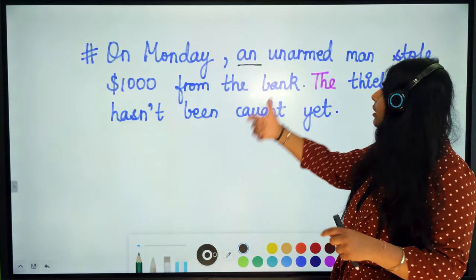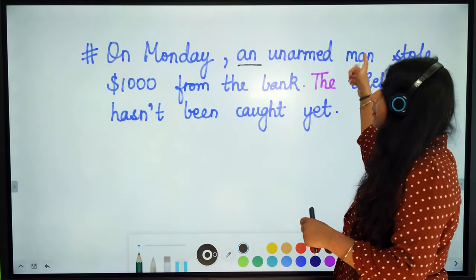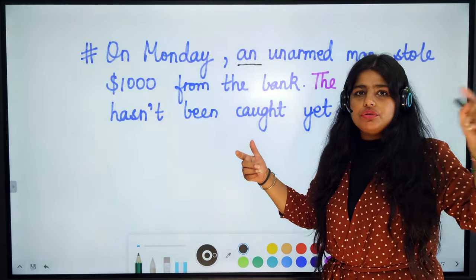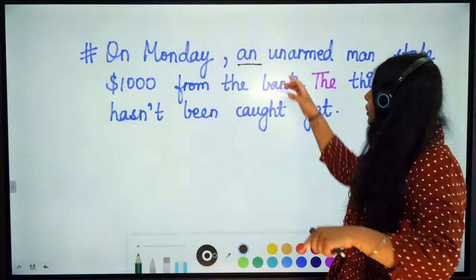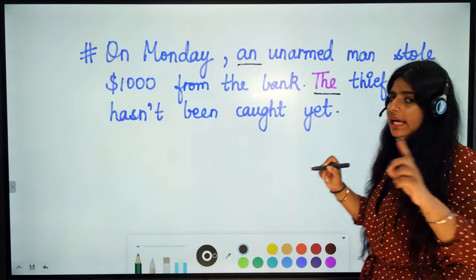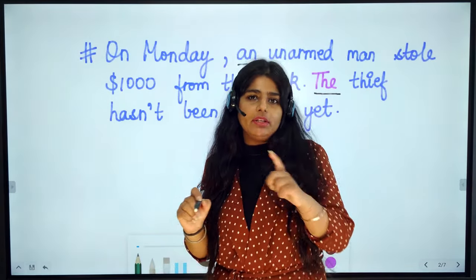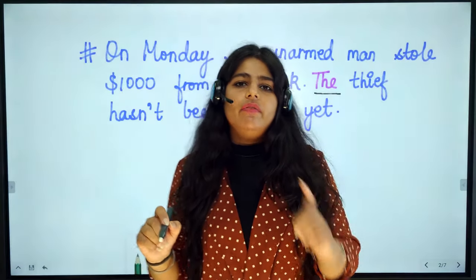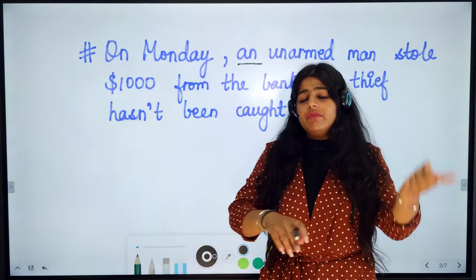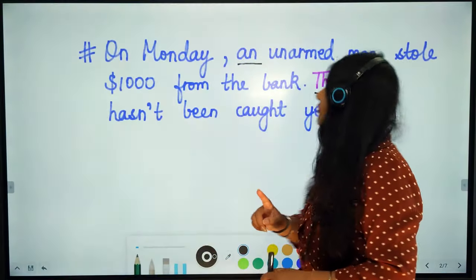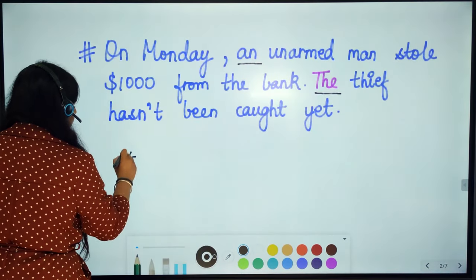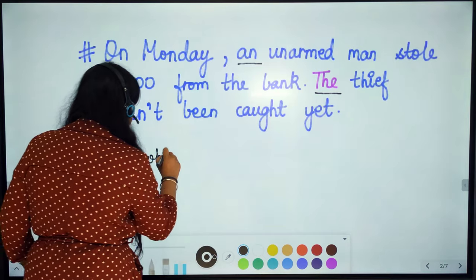I already mentioned 'an unarmed man' in the first sentence. So when I talk about this man again in the second sentence, I use 'the thief,' not 'a thief.' The rule is: when we mention something for the first time, we use 'a' or 'an,' but when we mention that same thing for the second time, we use 'the.'